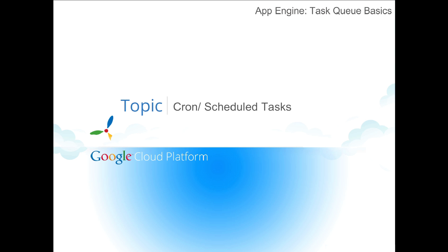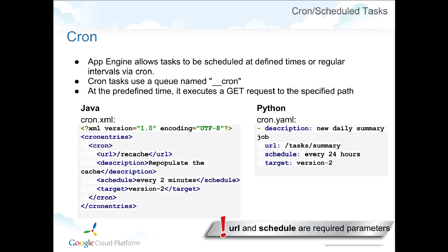The next topic is cron jobs, or what I like to call scheduled tasks. It's really just a task on the task queue that's scheduled to run at certain intervals. It hits a URL, the application runs as an admin, and for all intents and purposes you can treat it just like any other task queue being executed. In the admin console, you have a queue named __cron. You can pause that queue to stop processing all cron jobs, and you can also purge them. If something starts going crazy, you can pause, wait for it to finish, then resume and it takes off where it left off.